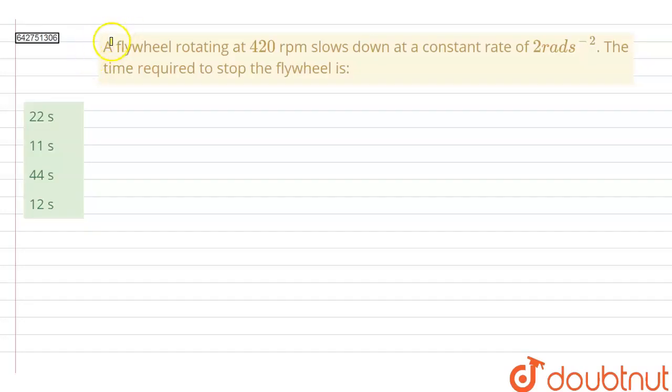Hello everyone. So in this question we have a flywheel rotating at 420 rotations per minute slows down at a constant rate of 2 radian per second square. The time required to stop the flywheel is.